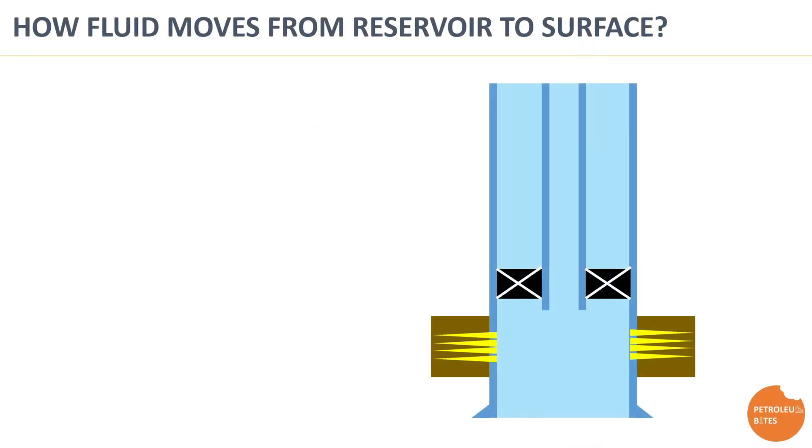So how does fluid move from reservoir up to surface? Imagine we have a completed well on formation with a certain reservoir pressure, and this formation has been subjected to a bottom hole flowing pressure that is lower than reservoir pressure. Then the fluid moves upward to surface toward the lowest flowing pressure.